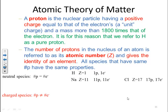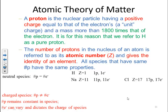For charged species, the number of protons does not equal the number of electrons. The number of protons remains constant for a given element, but the number of electrons can vary, and that's what dictates the charge of the species. Chlorine minus — the chloride ion — has atomic number 17, so it has 17 protons. Since it has a negative charge, it has one additional electron over the number of protons, giving it 18 electrons.